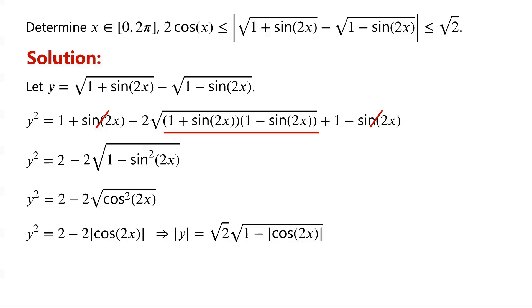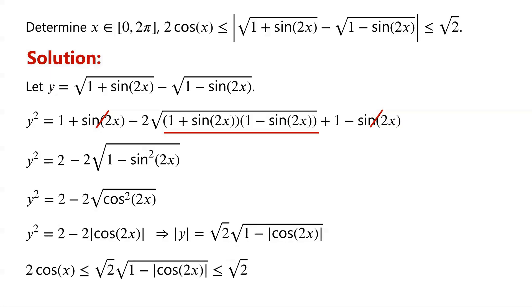Now the original inequalities become: 2cos(x) ≤ √2 · √(1 - |cos(2x)|) ≤ √2.